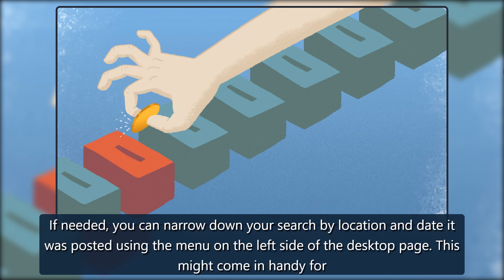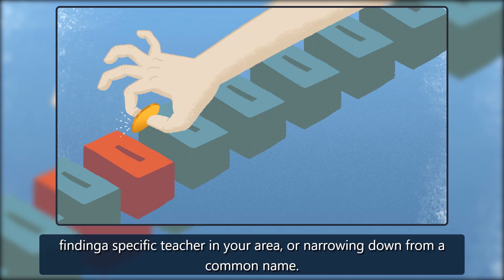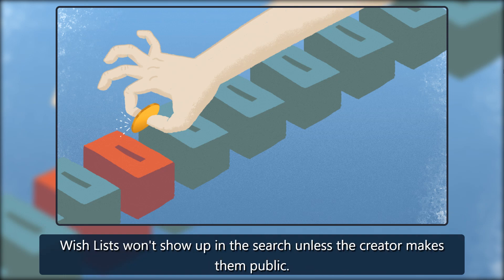If needed, you can narrow down your search by location and date it was posted using the menu on the left side of the desktop page. This might come in handy for finding a specific teacher in your area, or narrowing down from a common name. Wish lists won't show up in the search unless the creator makes them public.